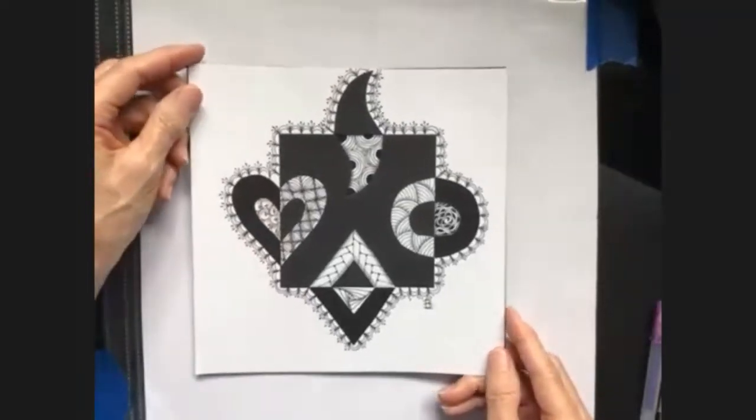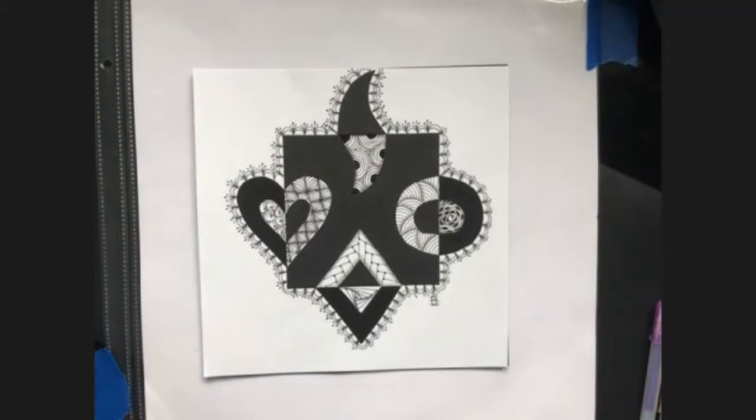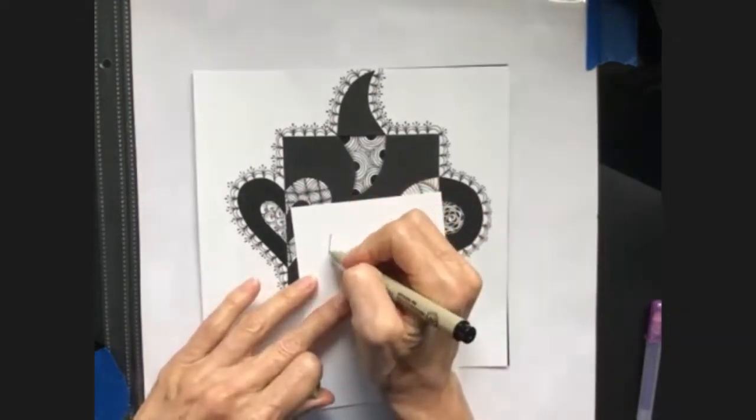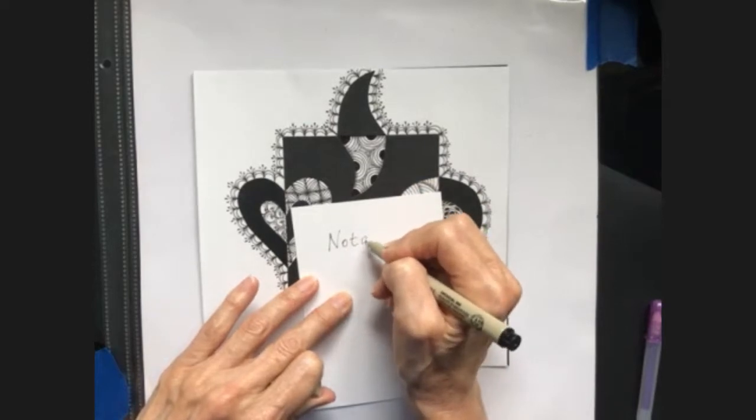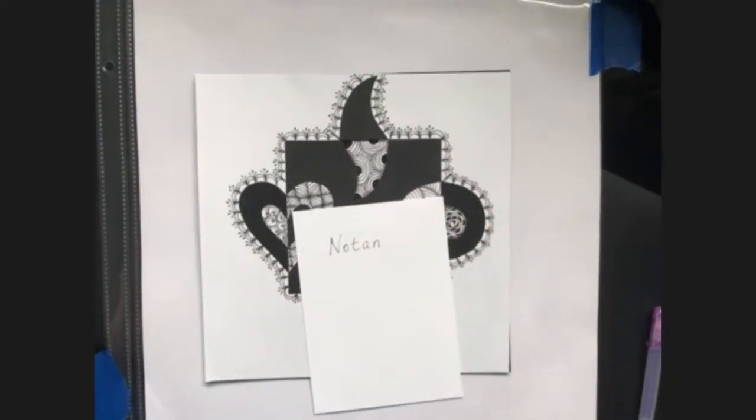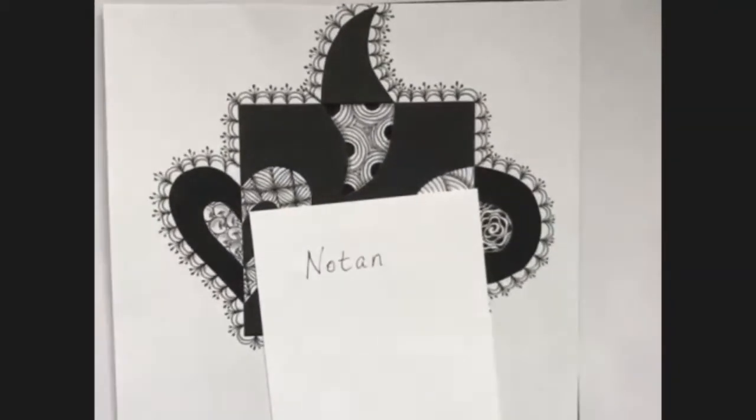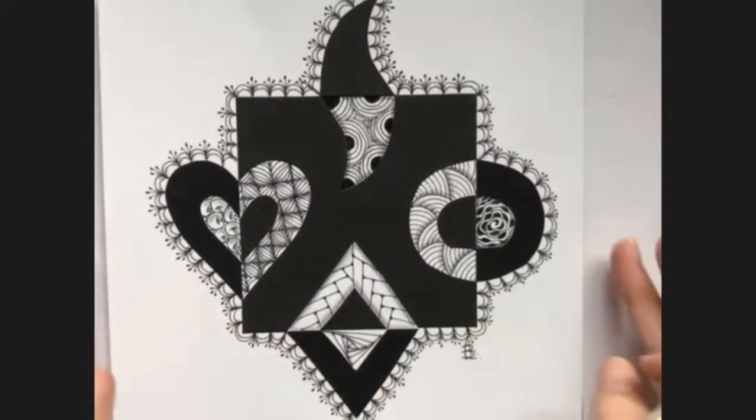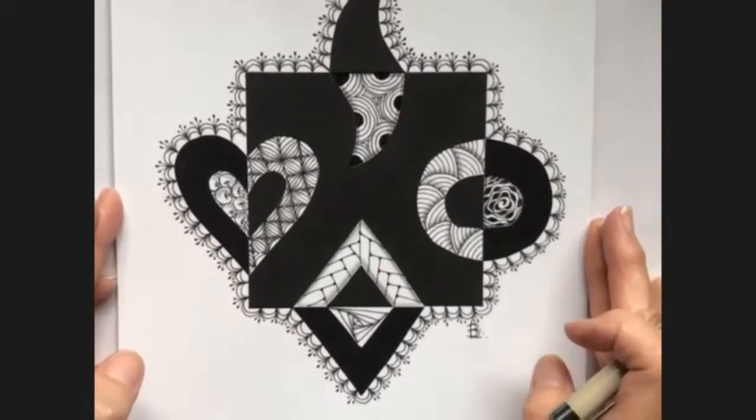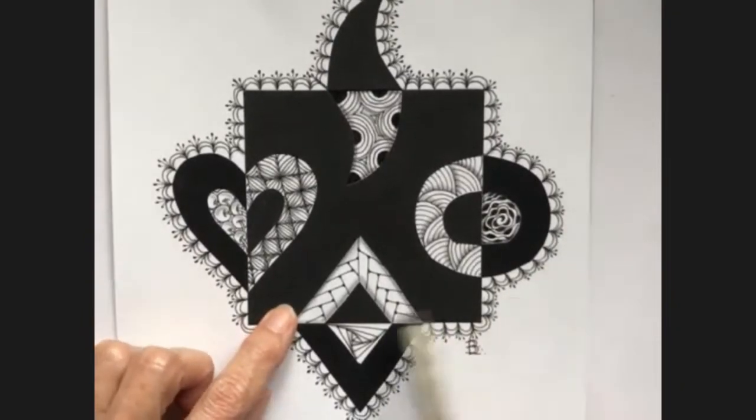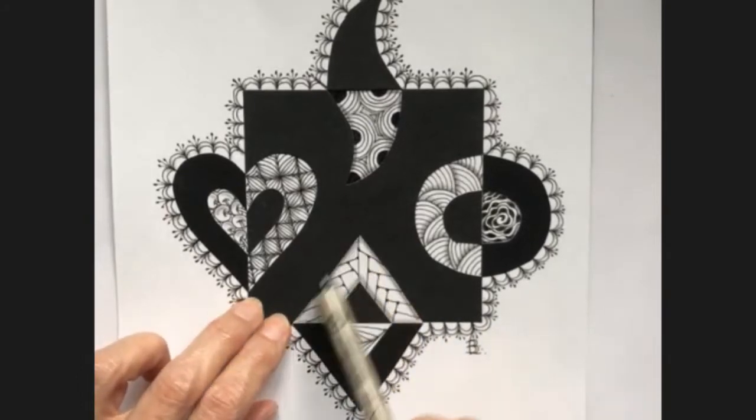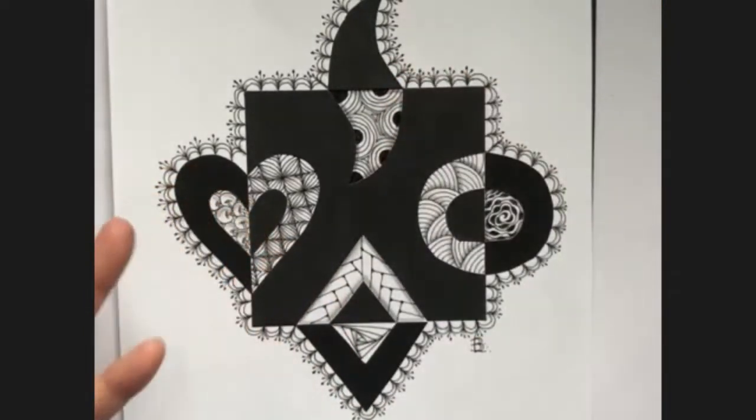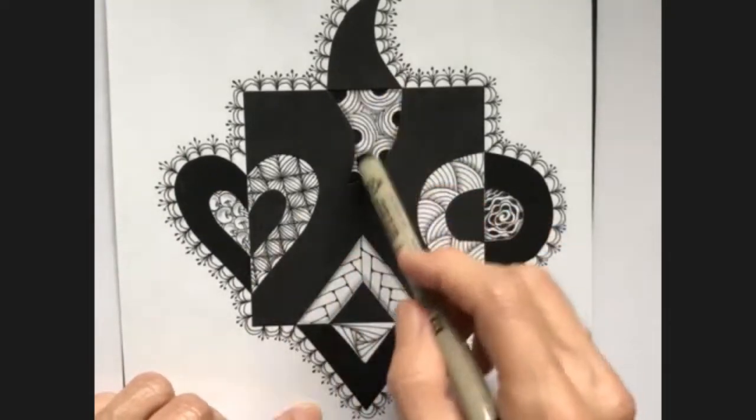But what I was going to show you in that original video was this. And it is called Notan, N-O-T-A-N. And it is a Japanese word for the balance between light and dark. And it's really a fun thing to do. This is an eight inch square piece of white paper with a four inch square.